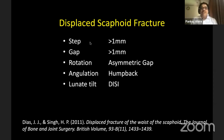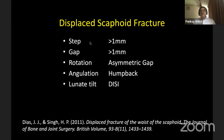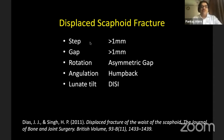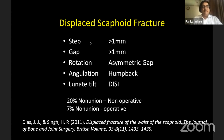How do we define a displaced scaphoid fracture? Dr. Dyes's paper says: a step or gap more than one millimeter, if there is a rotation as shown by an asymmetric gap, if there's an angulation as shown by a humpback deformity, and if there's a dorsal lunate tilt indicating a DISI deformity. These are definite indicators of a displaced scaphoid fracture and definite indications for surgical fixation as well.